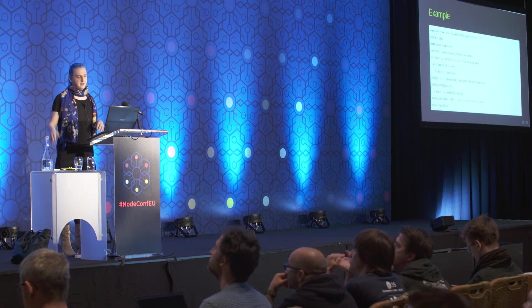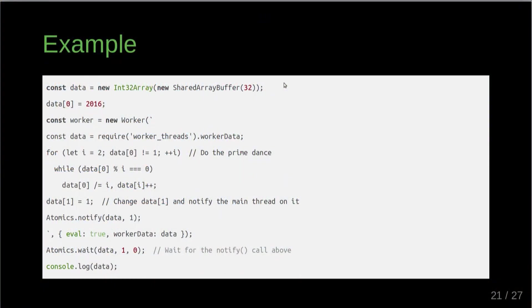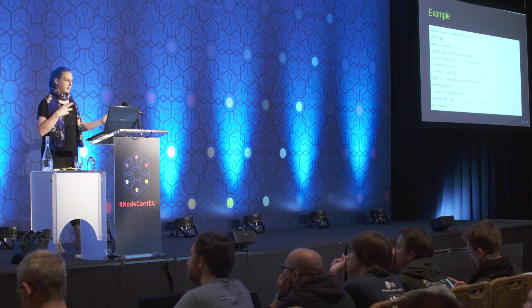There's a more complex example I'm going to skip due to time — you can look it up in the slides. It's one of those examples where you use a shared array buffer to share memory between threads and have them wait on each other using Atomics. It's mildly advanced and computes the prime factorization of some number.